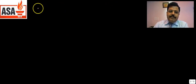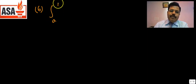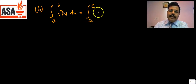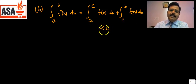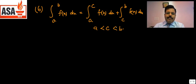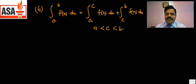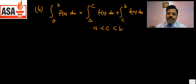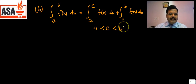The sixth property states: the integral from a to b of f(x) dx can be broken as the integral from a to c plus the integral from c to b of f(x) dx, provided c lies between a and b. As an analogy: if you want to travel from Delhi to Ahmedabad, you can rest in Kota (which is in between), but not in Mumbai (which is outside the route).